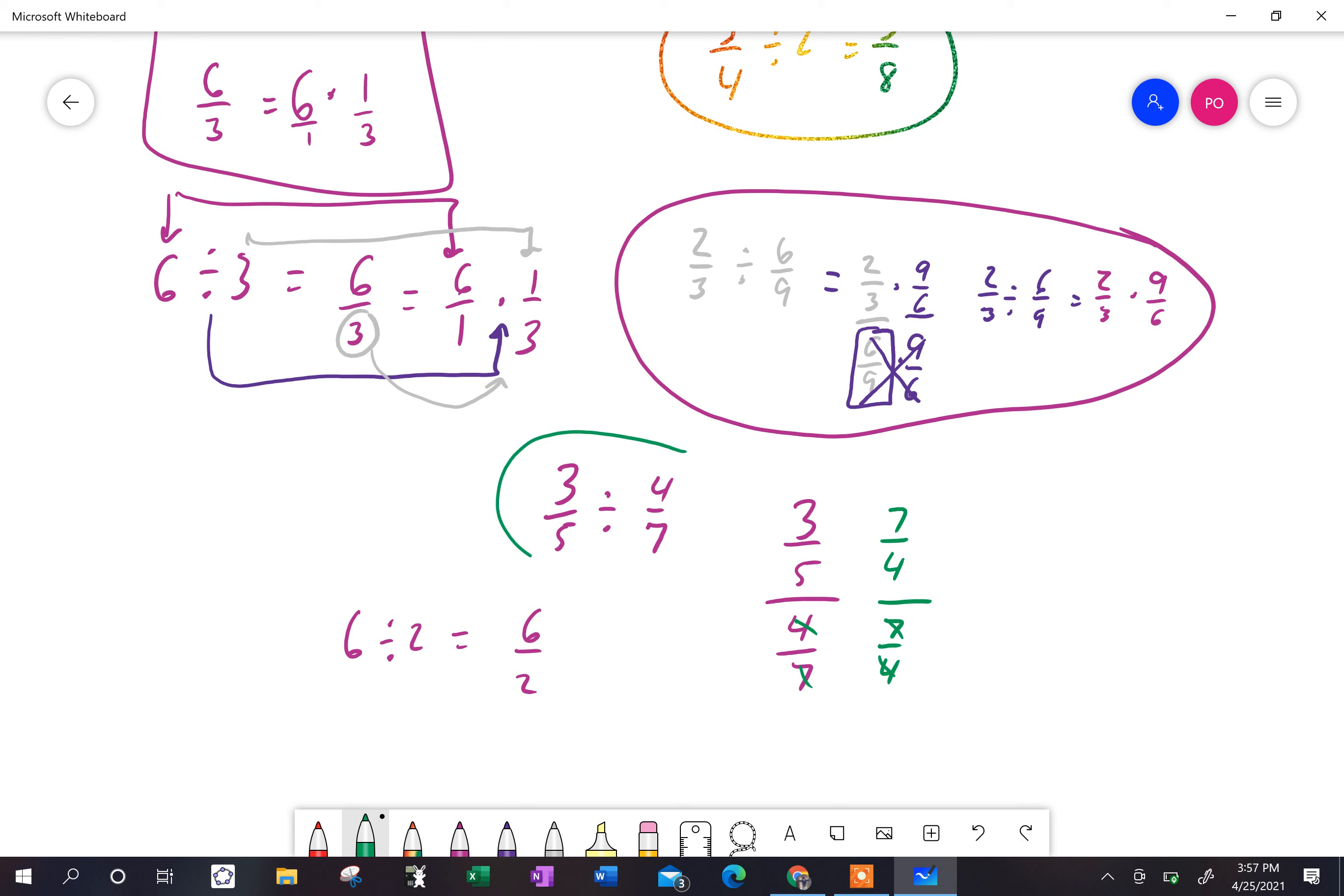And you can see here is my original fraction problem. And here is my new fraction problem, which means that three-fifths divided by four-sevenths is equal to three-fifths times seven-fourths.